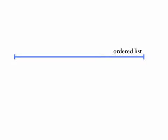We can visualize binary search like this. Here's an ordered list. We choose the thing in the middle and we want to know: is the thing we're looking for going to be on its left or on its right? If it's on its left, then we subdivide the left half of the list. Is the thing we're looking for to the left or the right of this new marker? We keep subdividing — a half, a half, a half again — until finally we find what we're looking for.